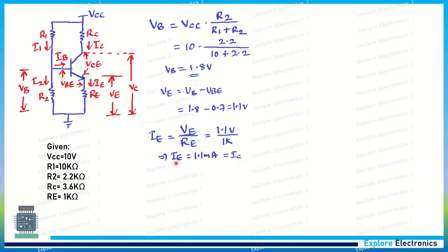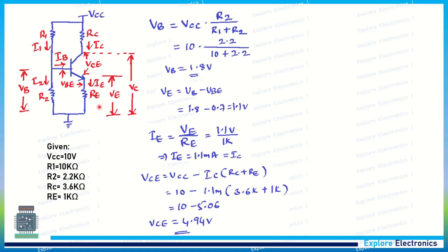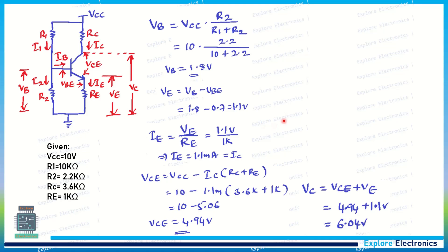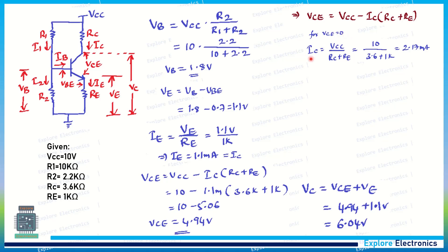Since IB is negligible, IC equals IE, so IC is 1.1 mA. Now we calculate VCE using: VCE = VCC minus IC times (RC plus RE). Substituting: 10 minus 1.1 mA times (3.6 kΩ plus 1 kΩ) gives VCE equal to 4.94 V. We can also calculate VC as VCE plus VE, which gives 6.04 V. To find the maximum IC, we set VCE to zero, giving maximum IC equal to 2.17 mA.